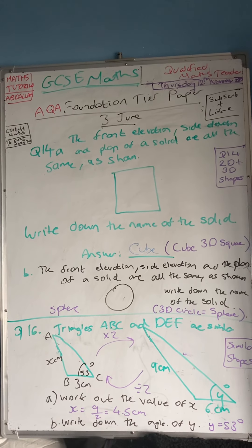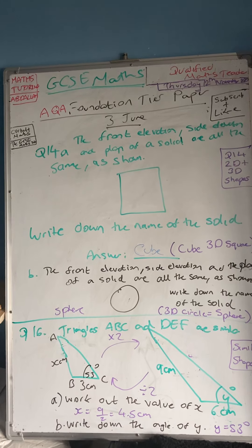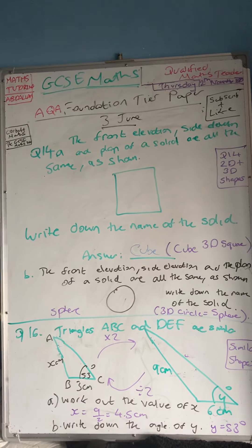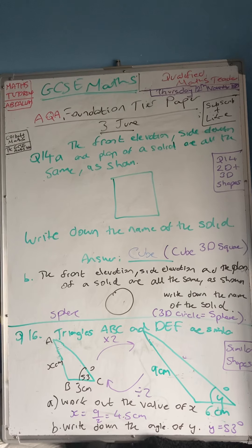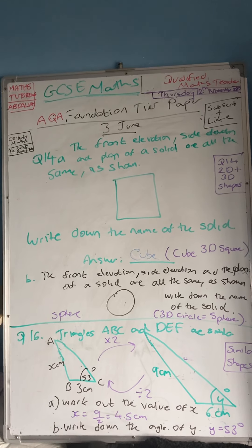Question 16: triangle ABC and DEF are similar. So this topic is called similar shapes. And question 14 is 2D and 3D shapes.